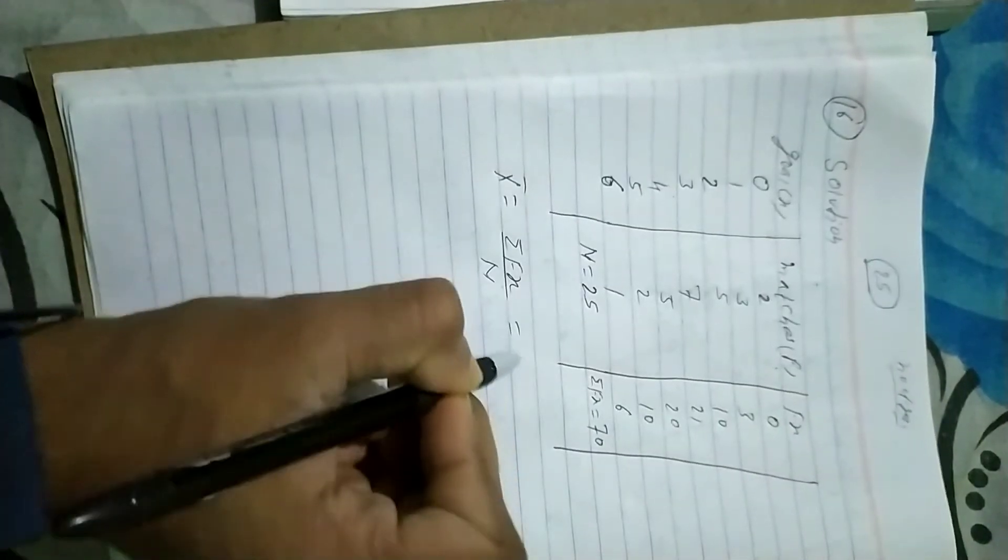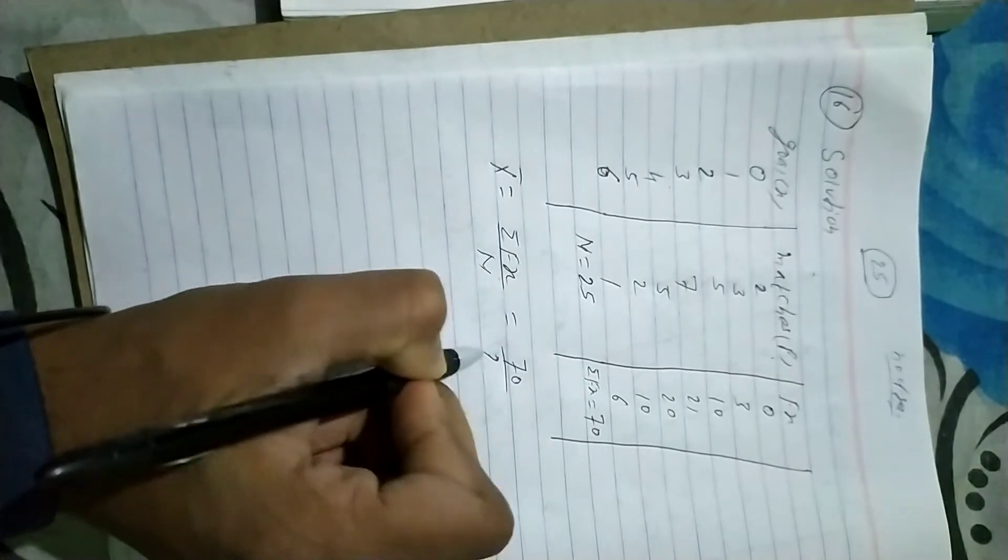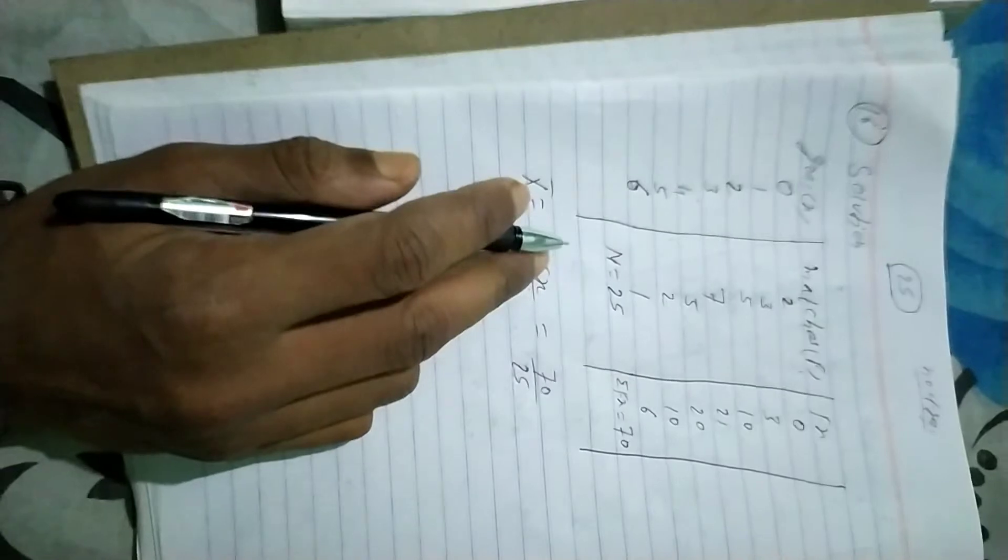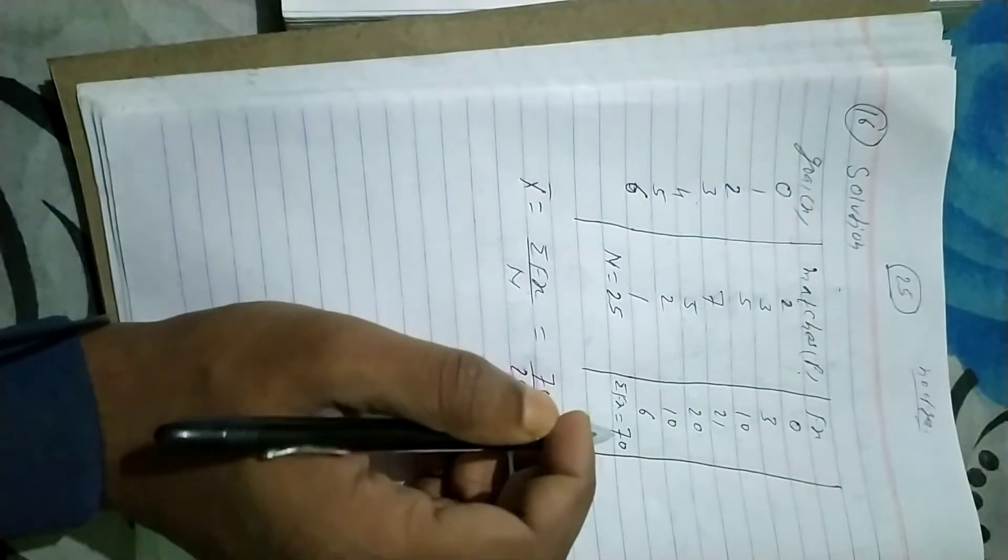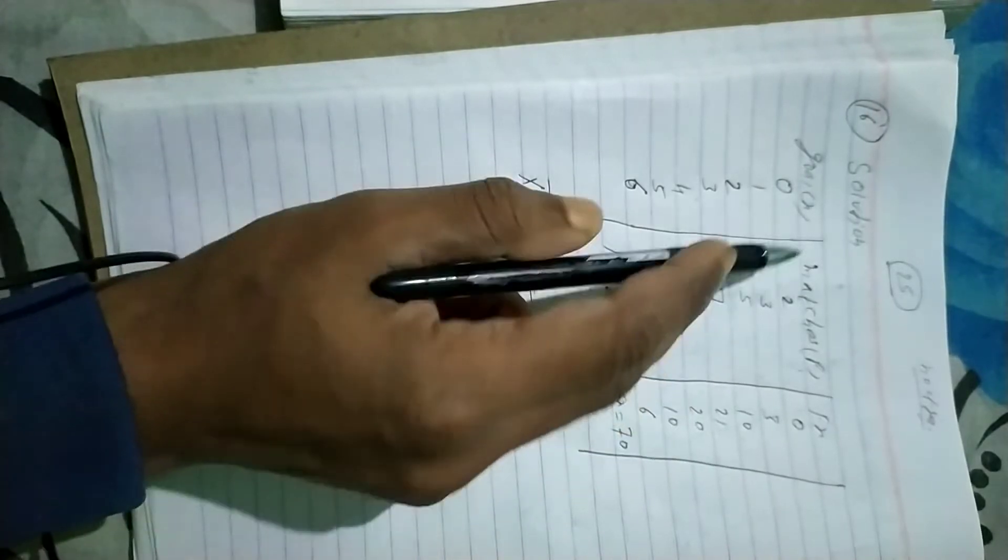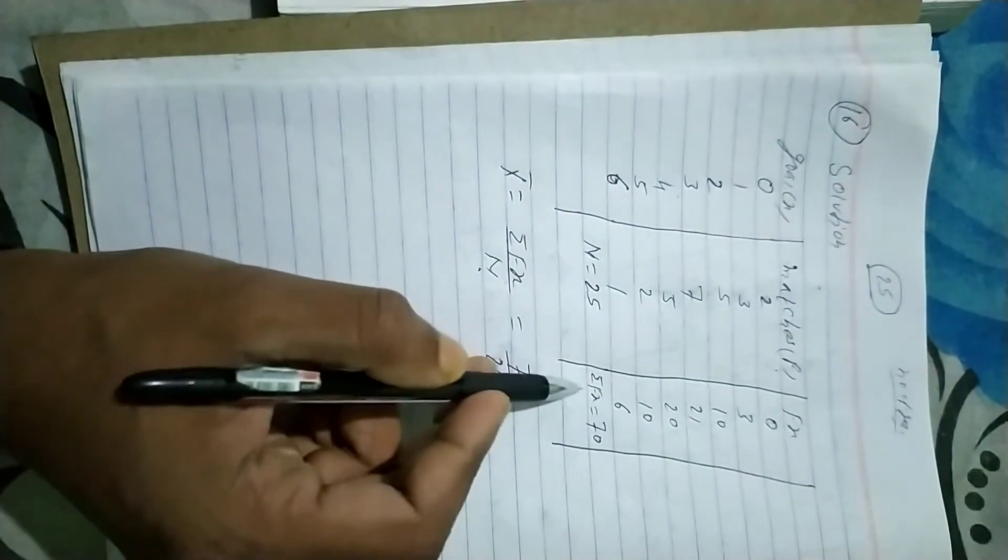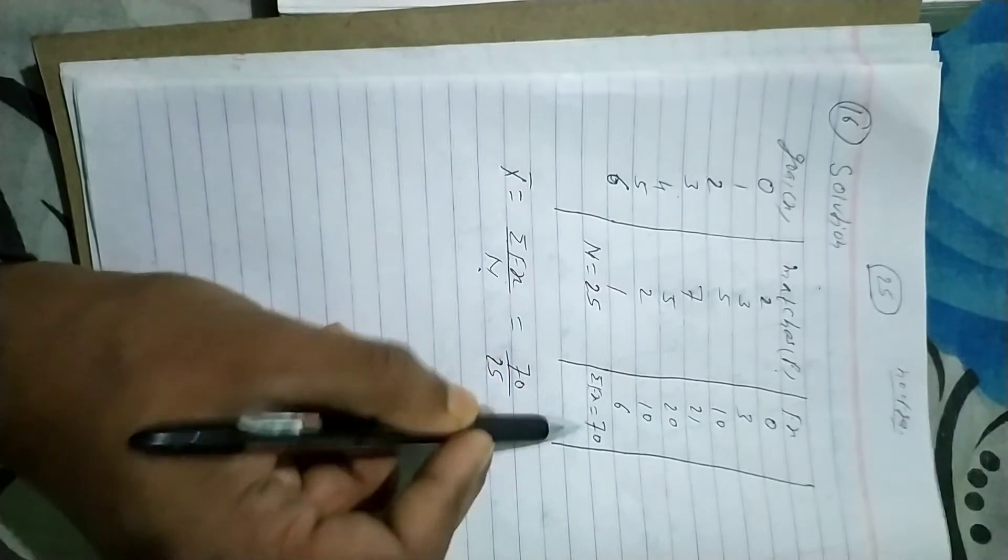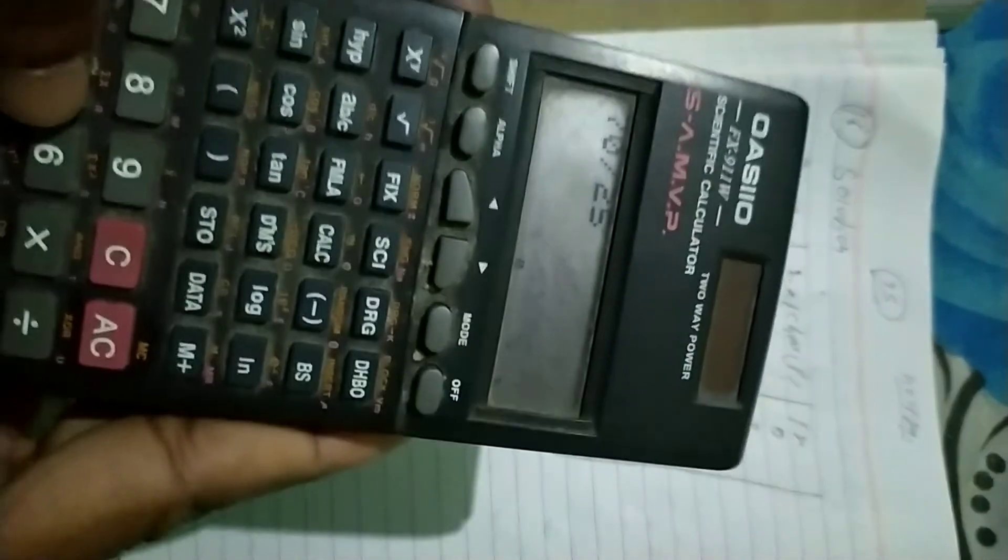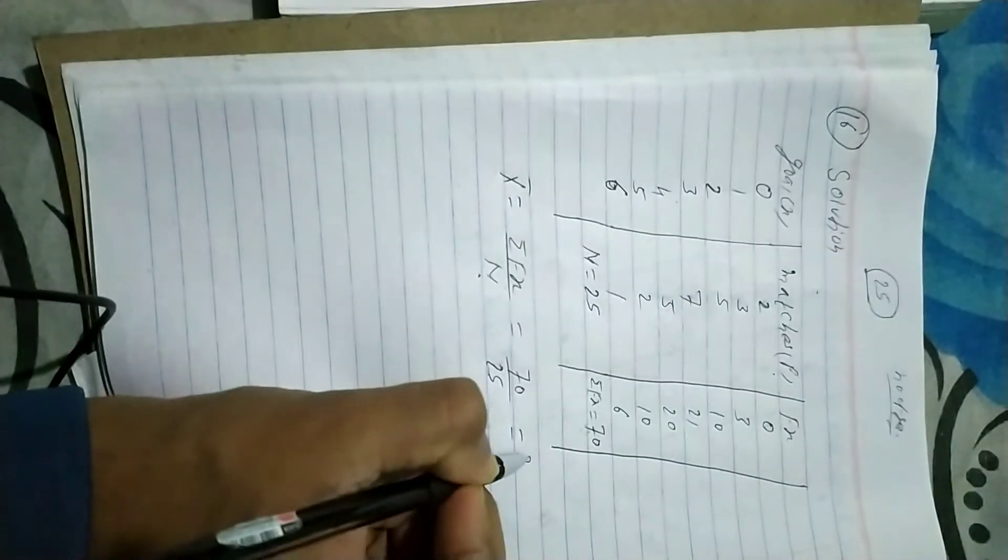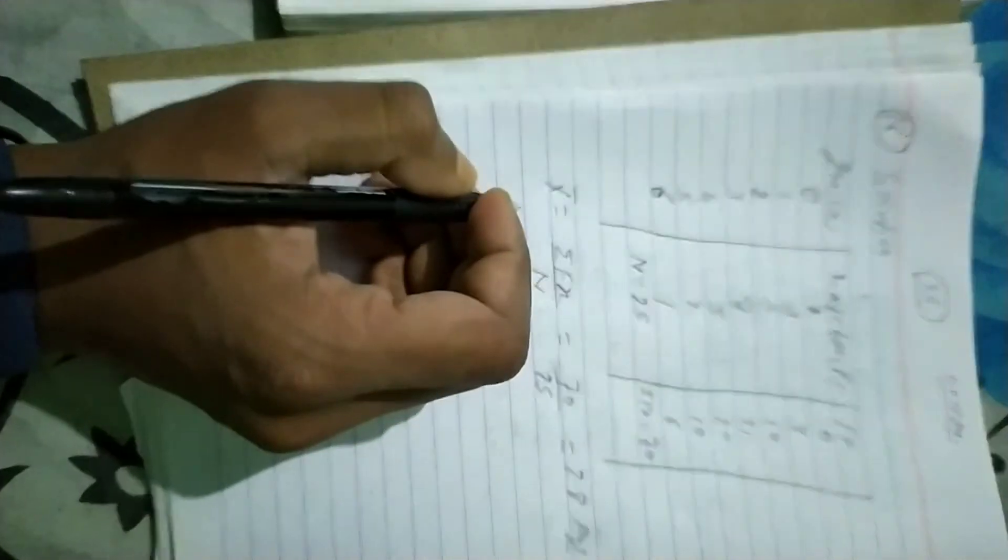In case of discrete series, the formula for mean is fx divided by n. Summation of fx is 70 divided by n which is 25, so 70 divided by 25 equals 2.8. So the mean is 2.8.